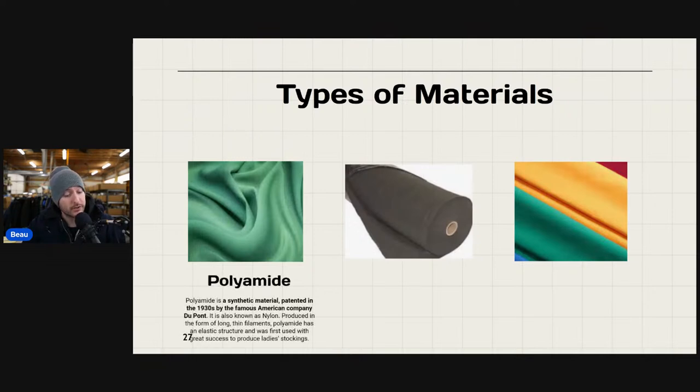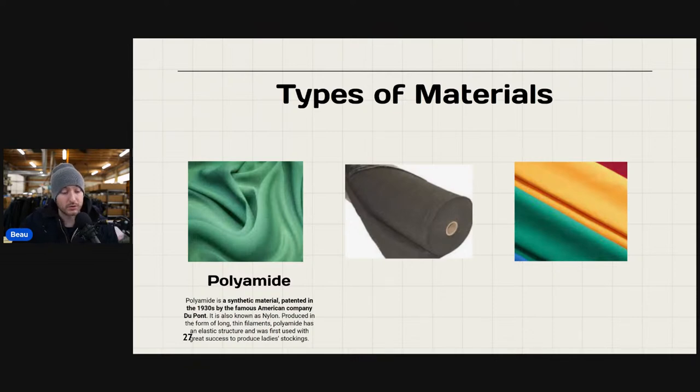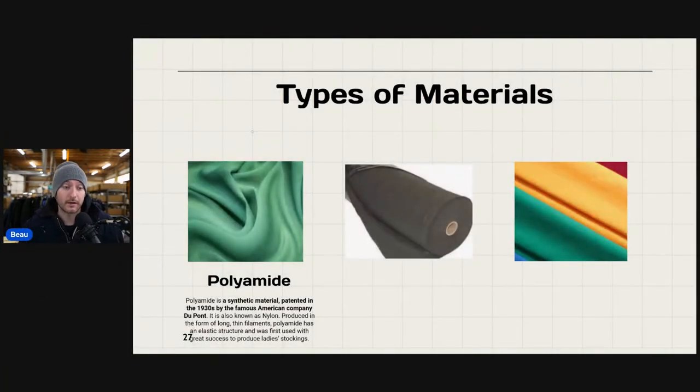Polyamide is a synthetic material patented in the 1930s by DuPont, also known as nylon, produced in long thin filaments. It has an elastic structure and was first used with great success in ladies' stockings. These materials are all in the item specifics drop-down menu. Some have similar names — like polyamide, also known as nylon. I would always put what the tag says, because the end buyer isn't familiar with these terms, and it avoids returns and confusion.